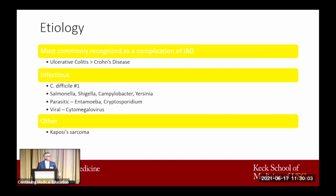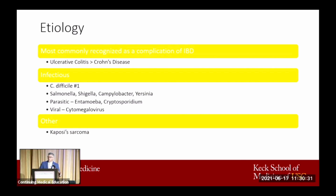Inflammatory bowel disease is at the top of the list. And of those IBD causes, ulcerative colitis is much more common than Crohn's. When we get to infectious causes, Clostridium difficile — C. diff — has to be number one on your list. There are a bunch of other bacterial causes including Salmonella, Shigella, and Campylobacter — all the usual suspects. There are parasitic causes, and there are also viral causes, specifically cytomegalovirus.